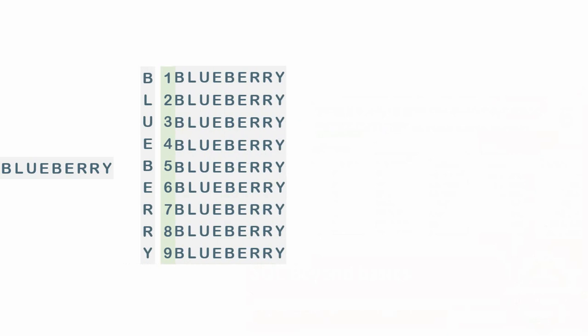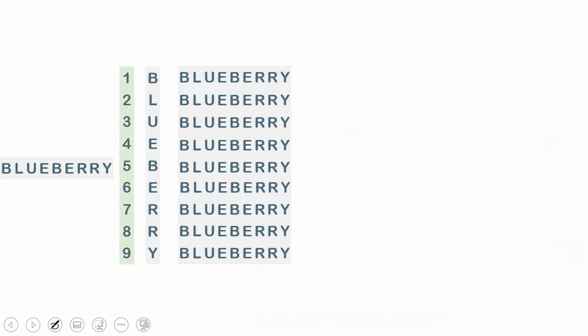Once we have converted the string to rows, the next step is to count the occurrences of each character in the string. For example, in row number one the character is B, so I am going to count the number of occurrences of B in 'blueberry'. There are two occurrences of B. To count characters, in the previous video we had two implementations — one using regular expression count and one without. You can use either method here.